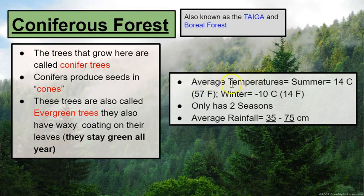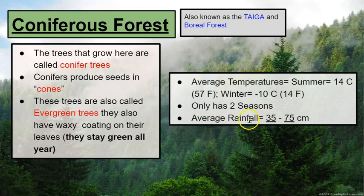The temperature in a coniferous forest is going to be an average of 57 degrees Fahrenheit in the summer. In the winter season it's going to be an average of 14 degrees Fahrenheit and it can get even colder than this. This biome only has two seasons — summer and winter — and the average rainfall in a coniferous forest is roughly 35 to 75 centimeters.